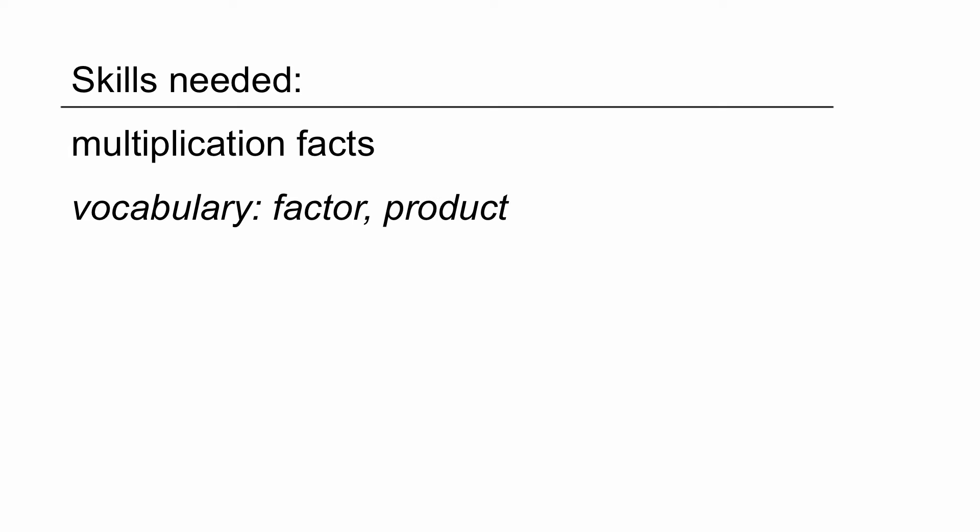So let's get started. The skills you're going to need are multiplication facts. All of the examples I'm going to show you today are mental math, so knowing six times eight and five times seven and things like that is going to be extremely important. And then the vocabulary, I'm going to be saying factor and product. If you don't know those terms, you're going to have to review them before you continue with this lesson.